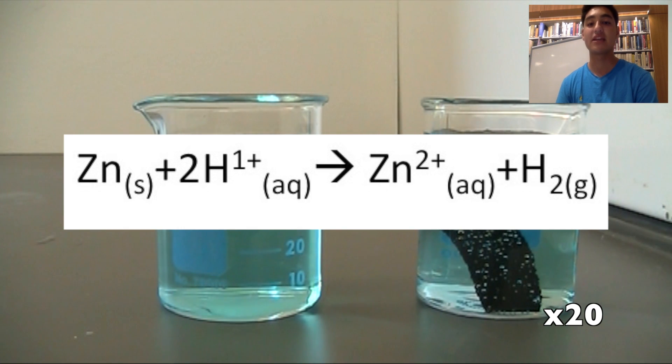Water naturally dissociates into H plus and OH minus, and the zinc reacts with the H plus. The end products are zinc 2 plus and hydrogen gas, because the hydrogen gets reduced and the zinc gets oxidized.